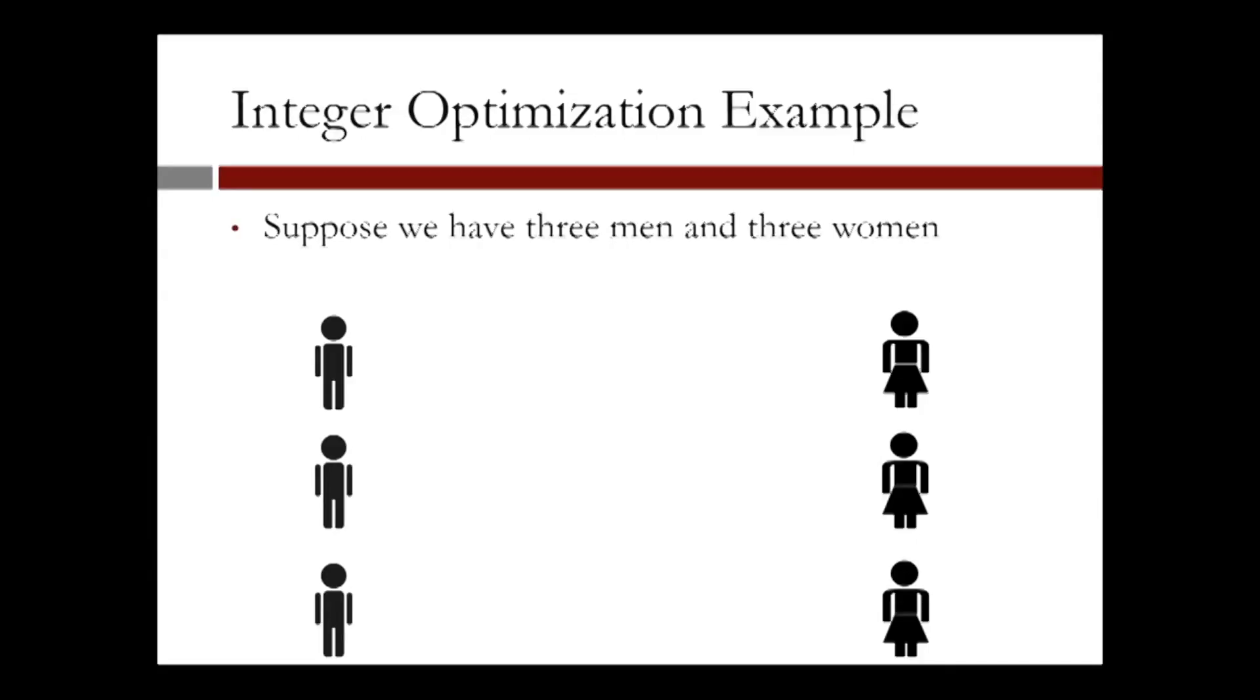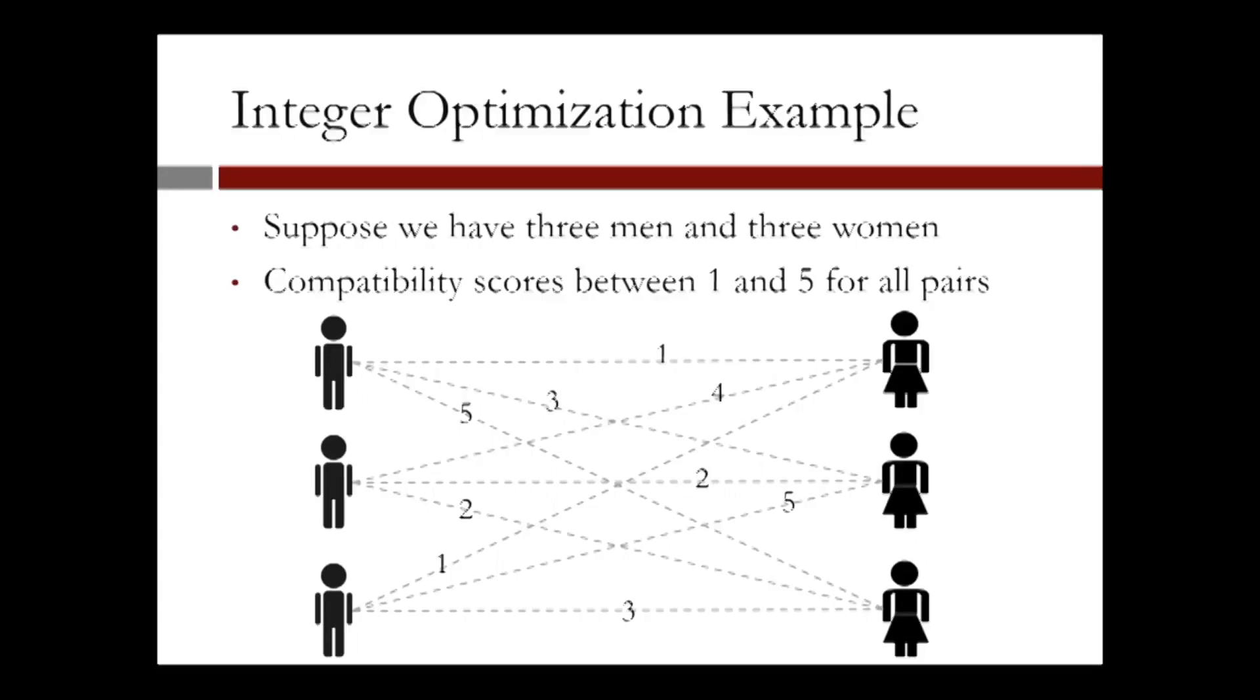Let us demonstrate the fundamentals of the approach called integer optimization that is used in the e-harmony matching algorithm. Suppose we have three men and three women. The compatibility scores range between one and five for all pairs and they are shown in the figure.